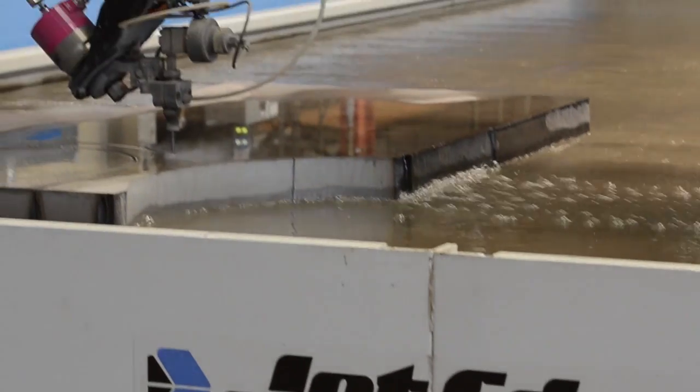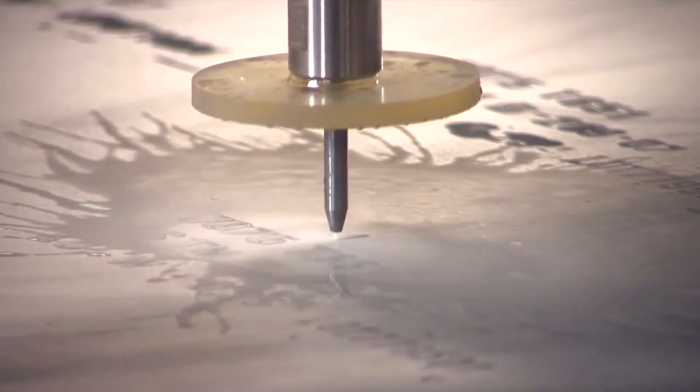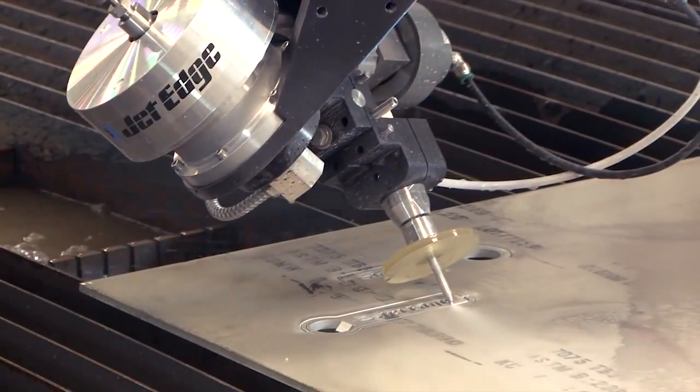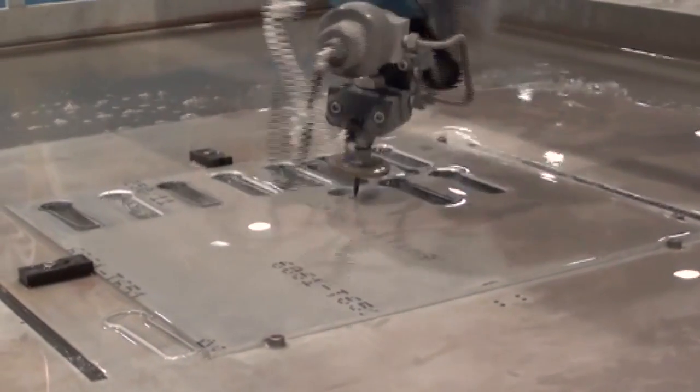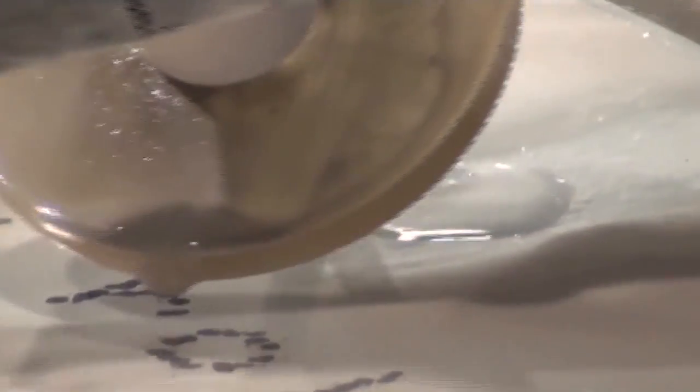Most of the industries that Jacquet serves have the need for tight tolerance, high precision water jet parts. With tapered control on the 5-axis head, we can literally cut from top edge to bottom edge at a tolerance of 1 to 2,000. The precision of cutting of our water jet is almost unlimited.